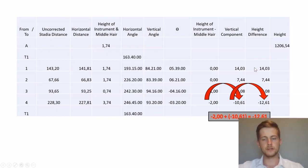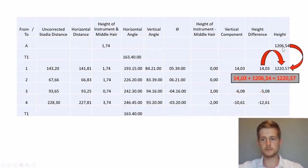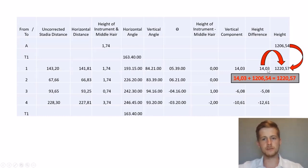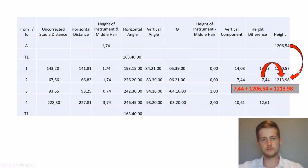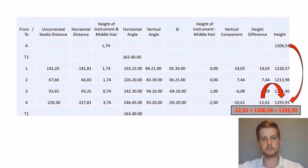From here we're going to calculate the heights of each point. We say the height of our benchmark plus the height difference and that gives us our answer — that'll be the height of that point. Here we have 14.03 plus 1206.54 meters above sea level as our elevation, giving us 1220.57. We do this for each of our points to get all their heights.